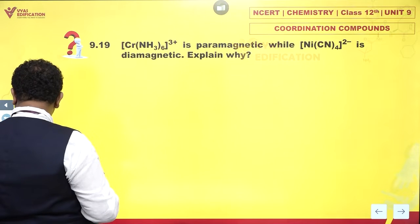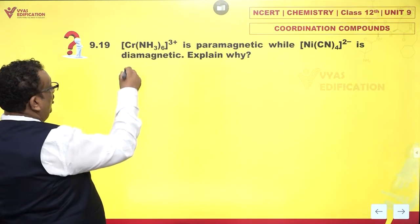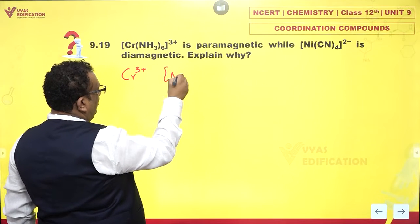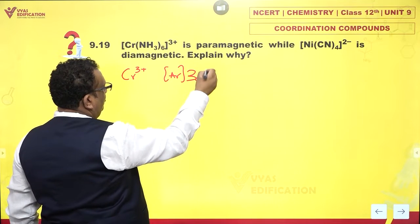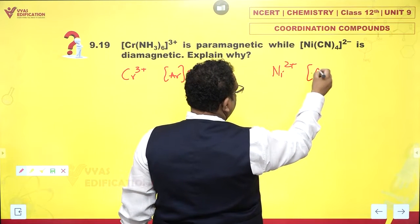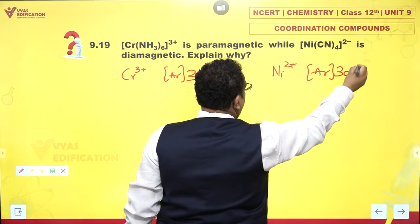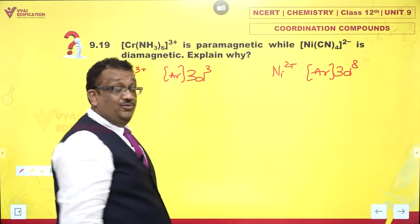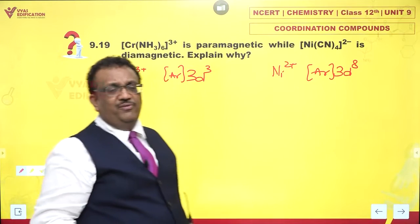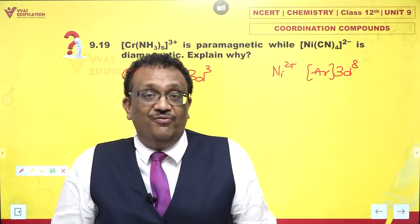First of all, you need to find out which are the central atoms. You have chromium 3+, electronic configuration [Ar] 3d³. And nickel is 2+, which is [Ar] 3d⁸. There is a remarkable difference. Ammonia is a moderately strong field ligand and cyanide is a very strong field ligand.